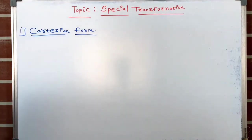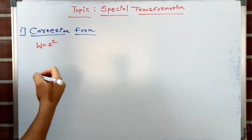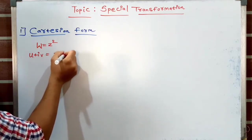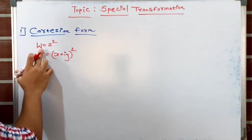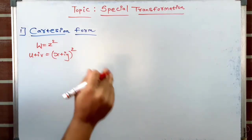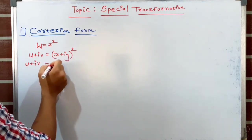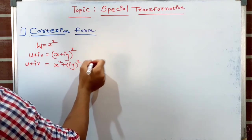Now we will derive the Cartesian form of the w = z² transformation. Let w = z² be given. We know that w = u + iv and z = x + iy. Whenever in this chapter you encounter w and z, replace w with u + iv and z with x + iy. So we have u + iv = (x + iy)², which expands to x² + 2xy·i + (iy)².